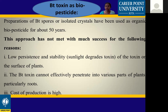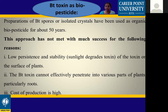The reasons for failure include: low persistence and stability of the toxin on the plant surface, as sunlight degrades the toxins. Beta toxin cannot effectively penetrate into various parts of the plant, particularly the root. Additionally, beta toxin is very expensive to purchase, so this is also considered a limitation.